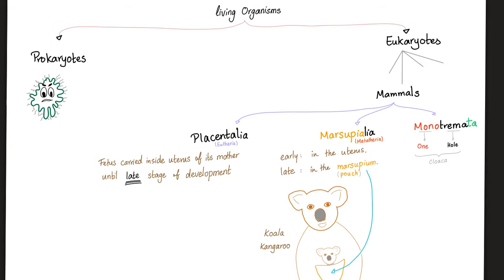We divide living organisms into prokaryotes and eukaryotes. Eukaryotes include bazillion things, including mammals, also known as mammalia. And they are subdivided to three categories. The first one is placentalia, the second one is the marsupialia, and the third one is the monotremata, meaning one hole, which sounds slightly inappropriate for a biology lecture.